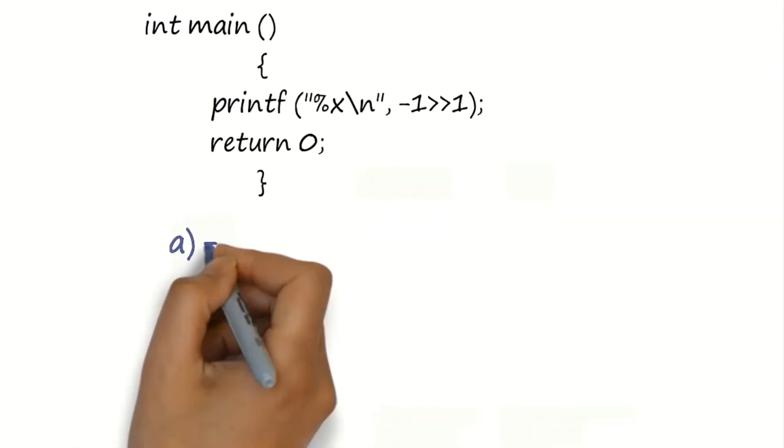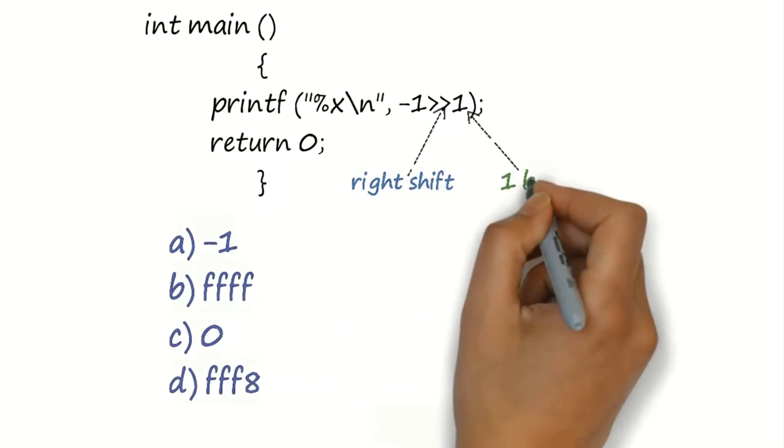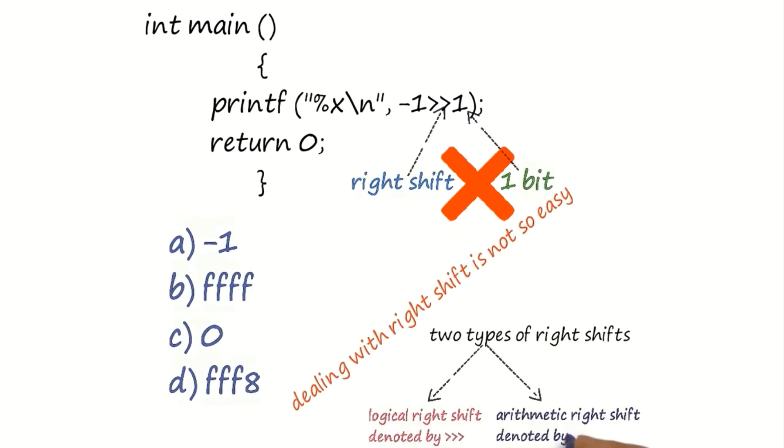In this problem, which seems like just a matter of right shift by 1 bit, this is not the actual case. Dealing with right shift requires understanding logical right shift and arithmetic right shift.